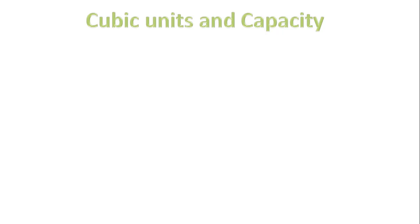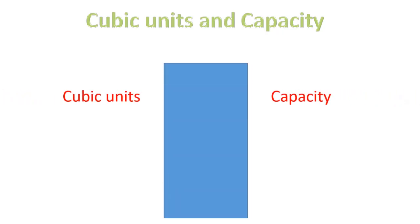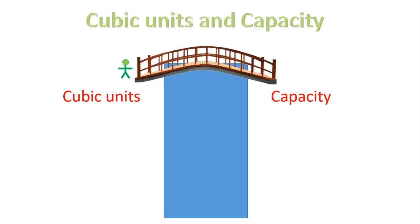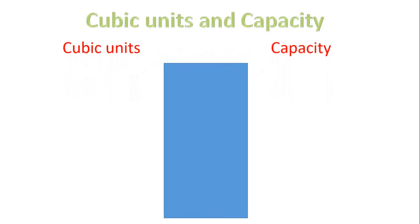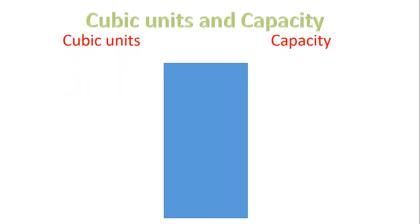We use cubic units for volume, and liters, milliliters, and kiloliters for capacity. When we're talking about cubic units and capacity, there's a massive gap — like a river between the two. What we want is the ability to go from cubic units to capacity; in other words, we need to build a bridge from cubic units all the way to capacity, and back again. We have four different bridges for doing this.